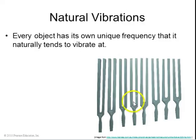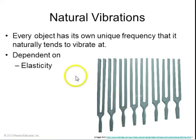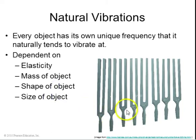Every object has some natural frequency that it wants to vibrate on. This depends on the elasticity of the object, the mass of the object, its shape, and its size. For example, these tuning forks, if you hit any one of them with a hammer, they'll vibrate at some natural frequency.